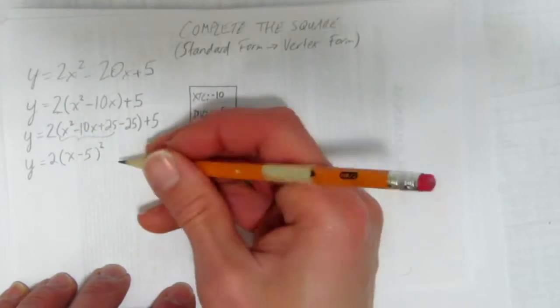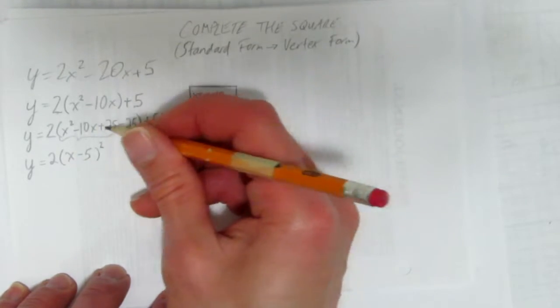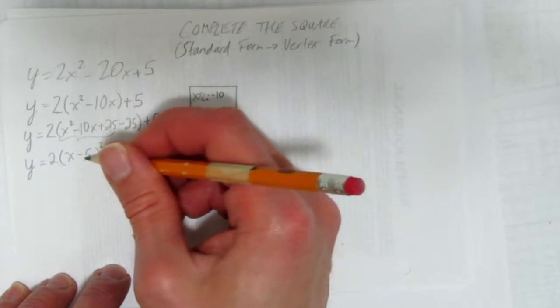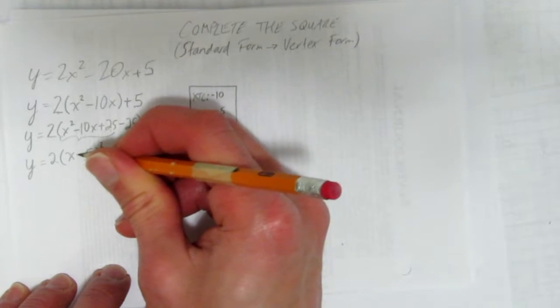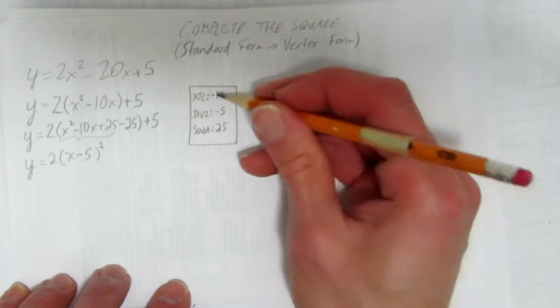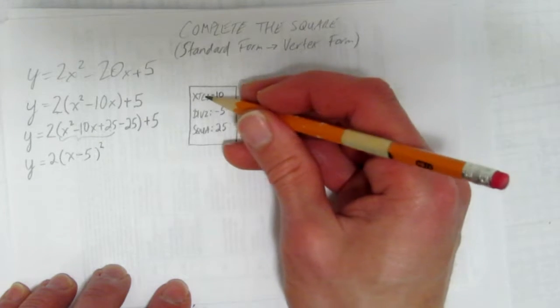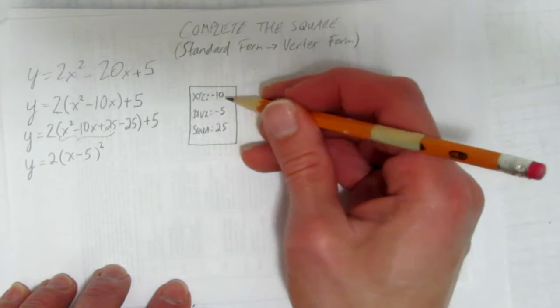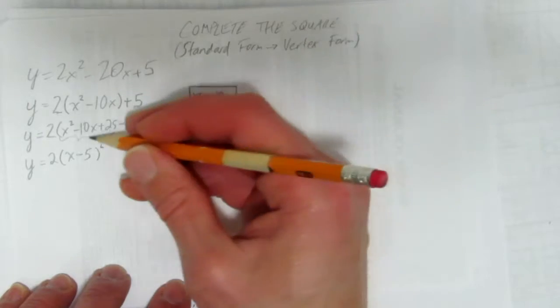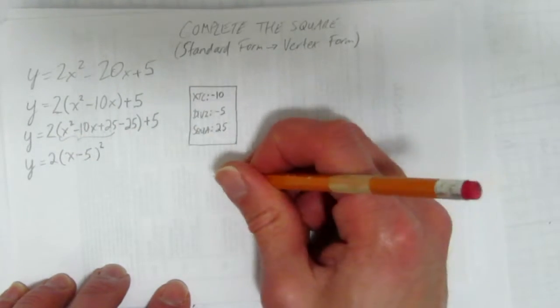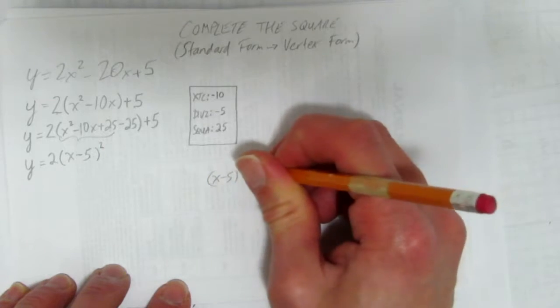Now here's where, when I teach this in class, a lot of students say, whoa, where did these things go? So let me show you. Where did this x minus 5 squared come from? It came from this strategy. This xTC, negative 10, divide by 2 and square it. When you do that, these three things will equal this. But I bet you don't believe me. So I'll show you. Look at what happens when you do x minus 5 squared.